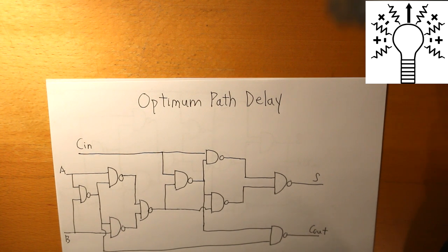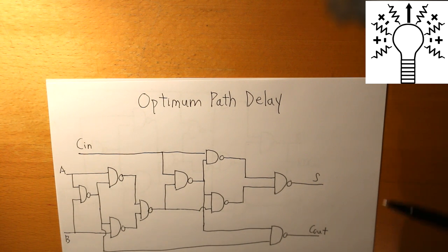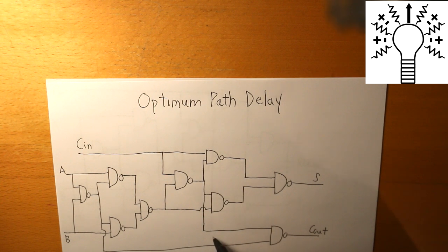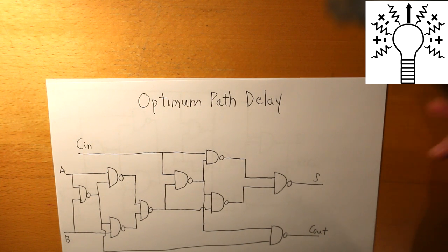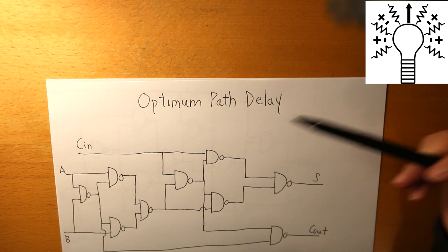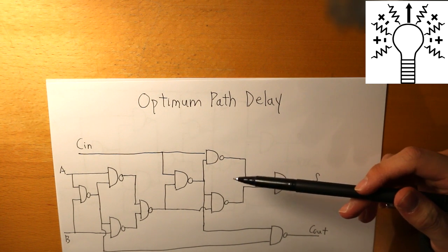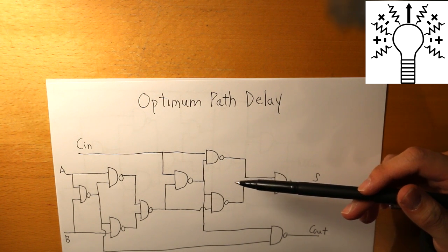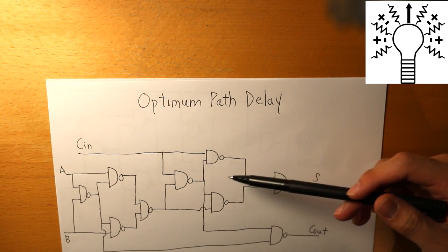As you can see, the full adder has 9 different NAND gates — simply put, it has 9 NAND gates.